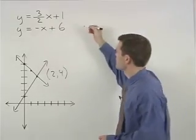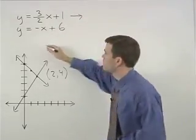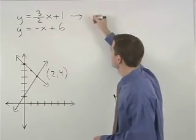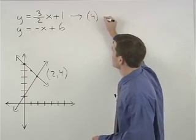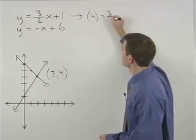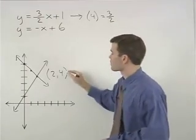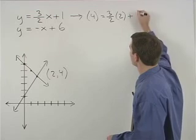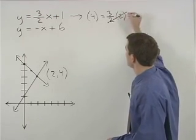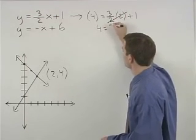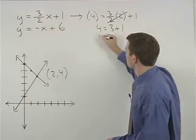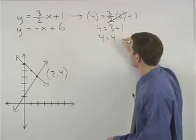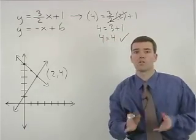For our first equation, y is 4 equals 3 halves times x, which is 2, plus 1. The 2's cancel. We have 4 equals 3 plus 1. So 4 equals 4, and our first equation checks.